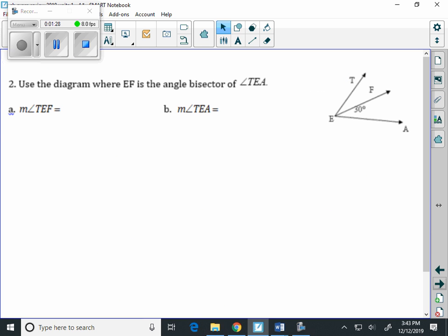Number 2, use the diagram where EF is the angle bisector of angle TEA. Well, if it's a bisector, EF is cutting this entire angle in half. So, if angle FEA is 30, then angle TEF is also 30.